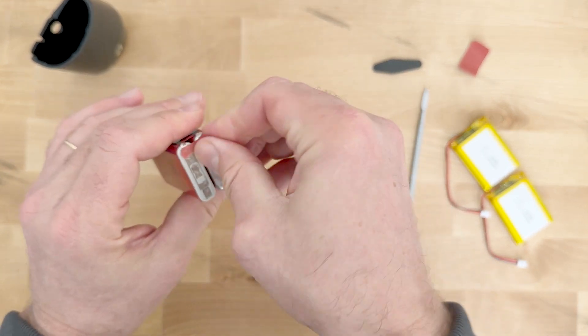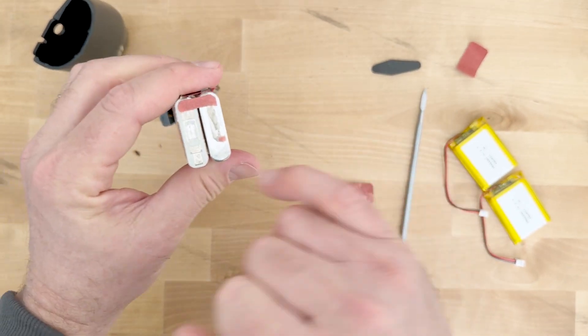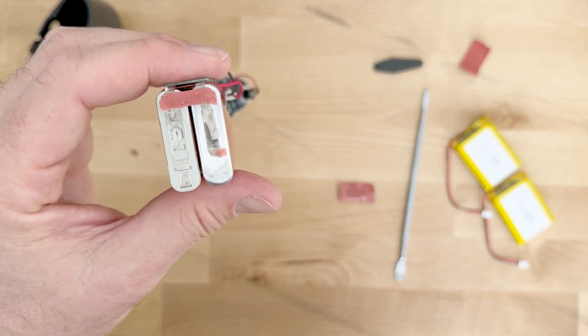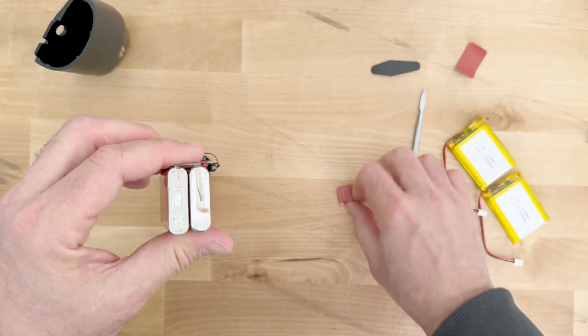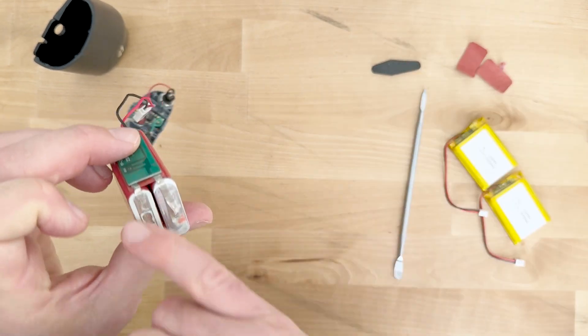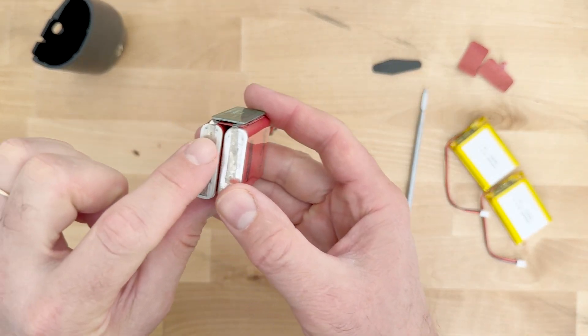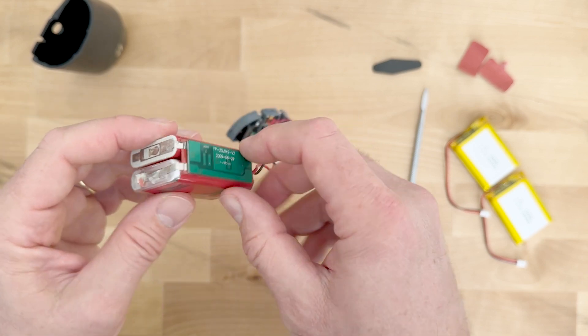Taking it apart, just work through it, it's not complicated. You can see there's the positive and negative on the other side and you can see the tabs connecting to the board. So like I said, we need to save the board.